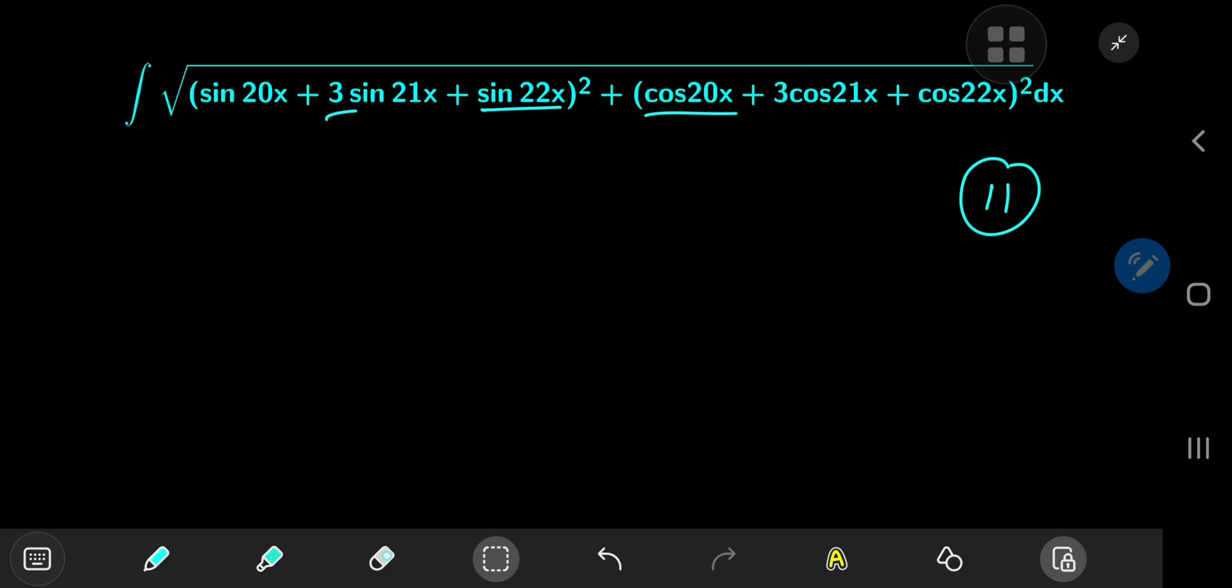And what about the cross terms? Well, the cross terms will give rise to 2 times sine 20x times sine 22x plus cosine 20x times the cosine of 22x.